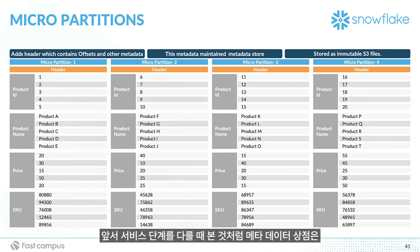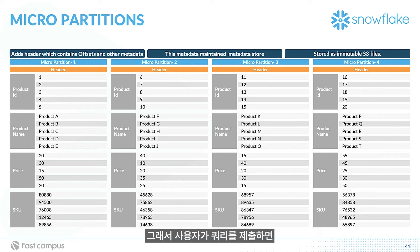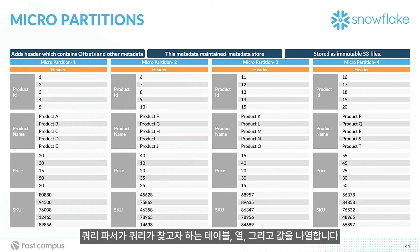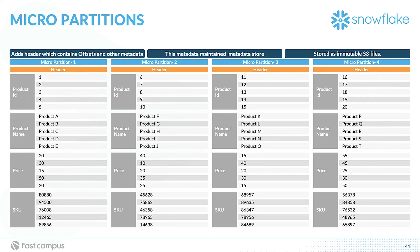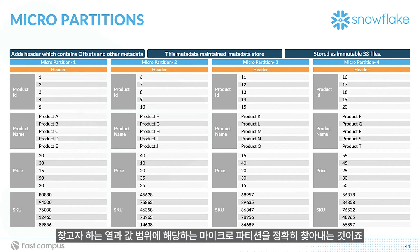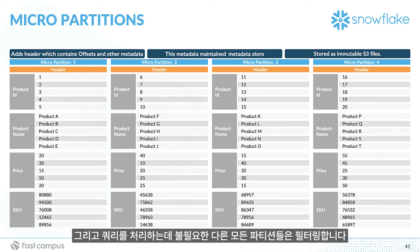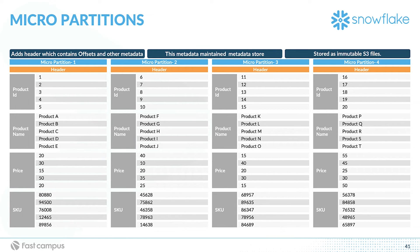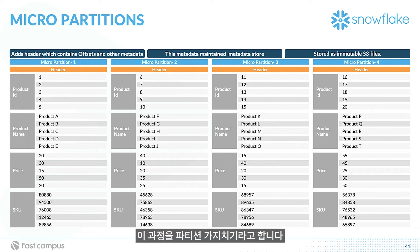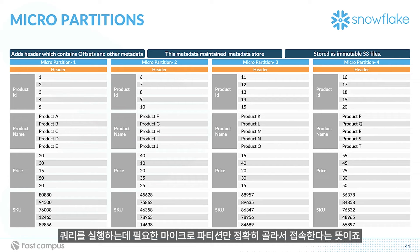The metadata store, as we saw previously from the services layer, contains metadata information about the columns and the S3 location. When a user submits a query, the query parser identifies the required tables, required columns, and the values the query is looking for. Using the metadata store, it finds the exact micropartitions that have those columns and value ranges, and filters out all other partitions not required for processing. This process is called partition pruning — it only accesses the exact micropartitions required for query execution.